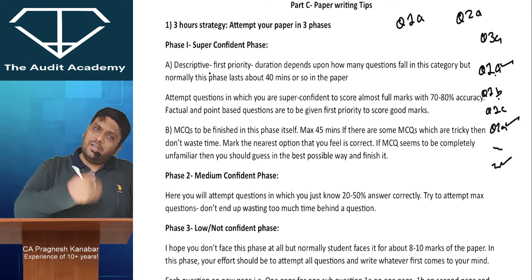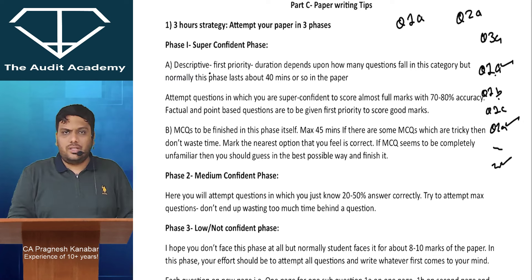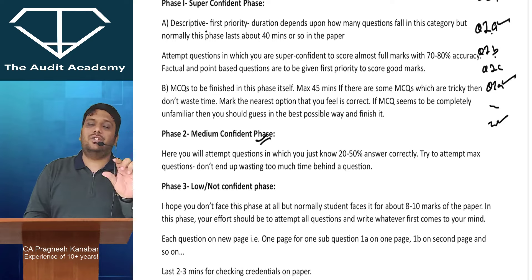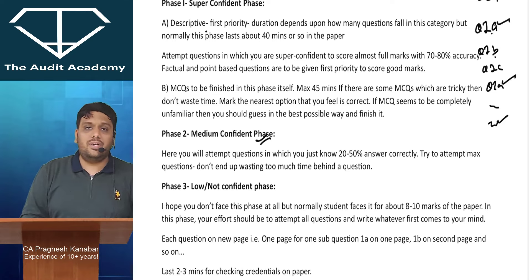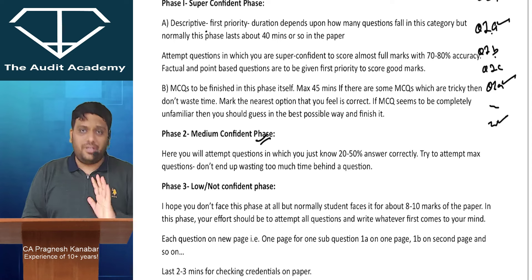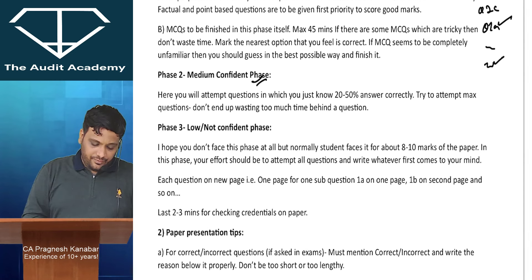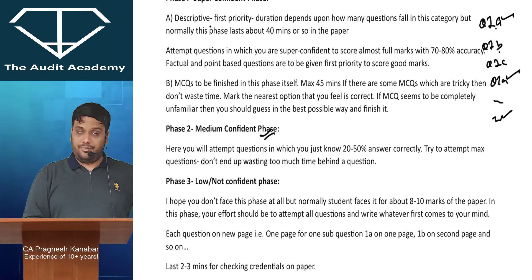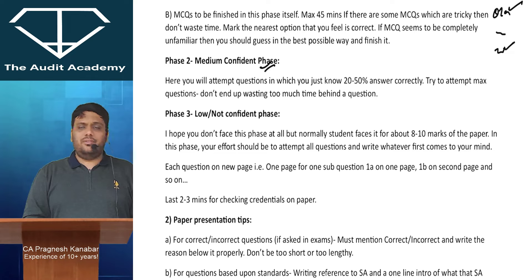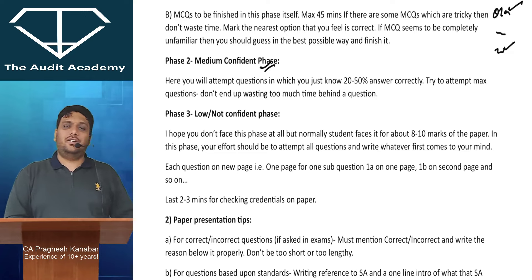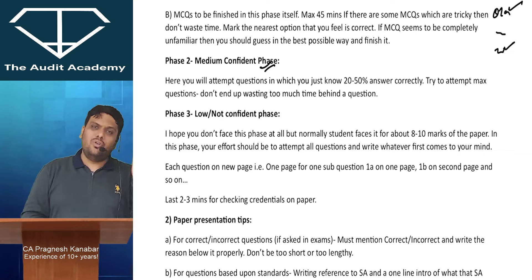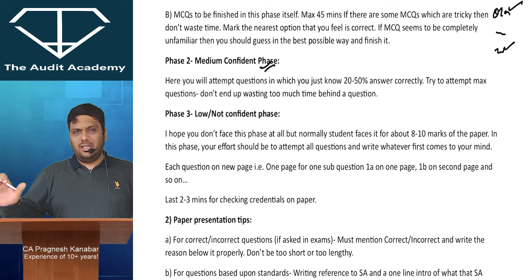You can first attempt MCQs, then attempt the questions where you are super confident. Phase two will be the medium confident phase - where you understand the question but are not exactly remembering the language. Attempt those questions and whatever comes to your mind, just vomit it. By phase two, ensure that all MCQs and everything is done. The last phase is the low confident, not confident, or blank phase.